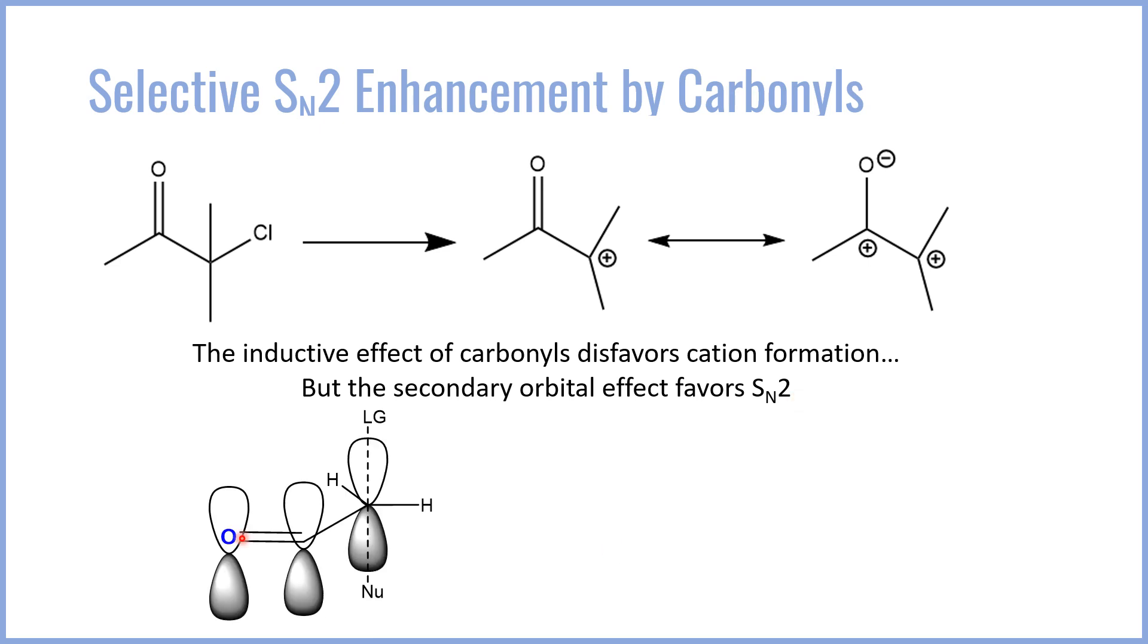If we look at the orbital picture, it looks exactly the same as it did for the regular allylic substrate. The pi bonds in the carbonyl can overlap with that transition state, giving us that hyperconjugation without creating the destabilization of the carbocation. And so, if we have a species that is alpha to a carbonyl, like this chlorine here, the SN2 process actually is favored.